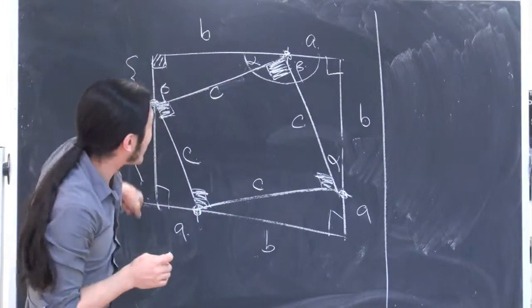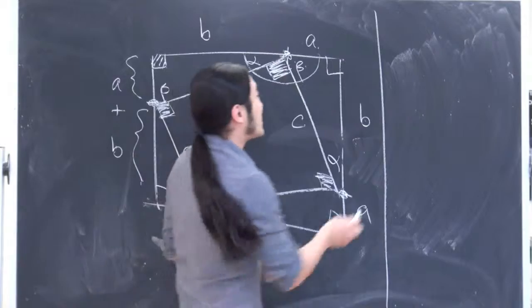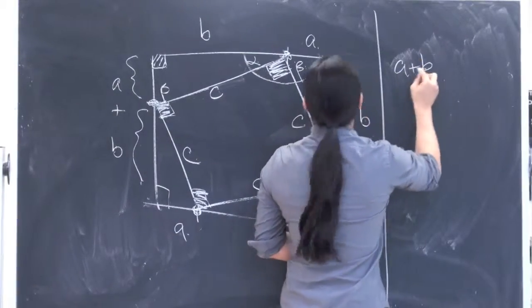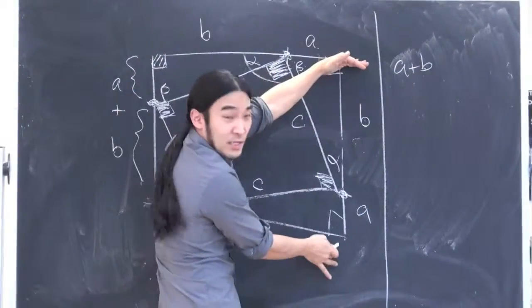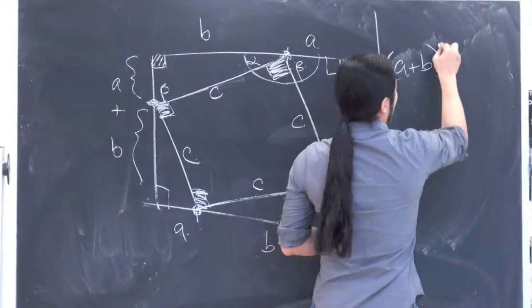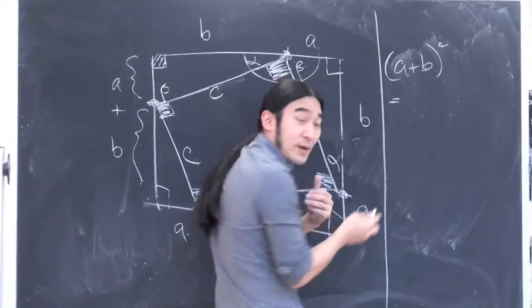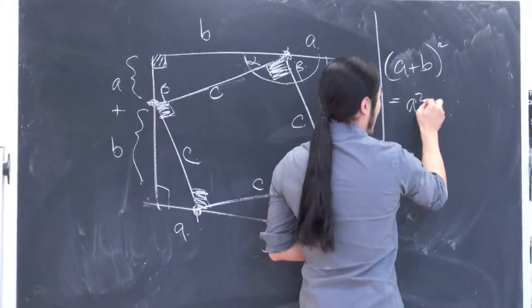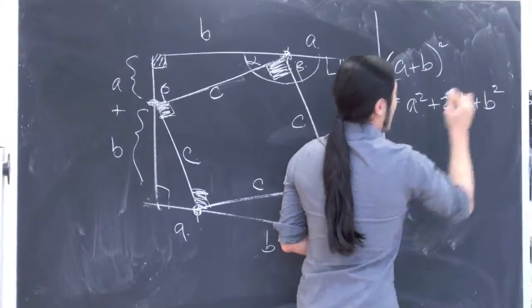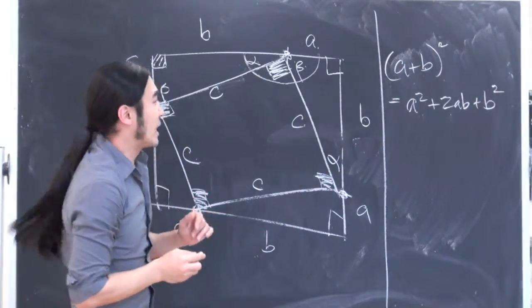So let's try to figure this out. In fact, why don't we just get the area of the big square? The area of the big square is A plus B for this side times A plus B for this side. So it's A plus B squared. And this is one of our special patterns, right? So this has got to be A squared plus 2AB plus B squared.